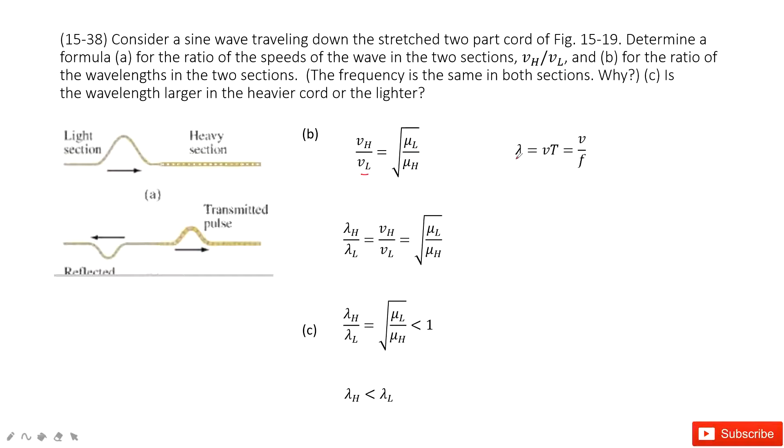If we want to find the wavelength, we know wavelength is the speed times period. And in this case, the period is the same because the period is determined by frequency, 1 over F. And the frequency is the same everywhere.